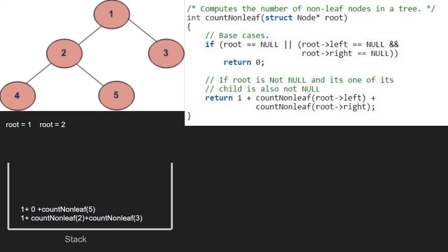Next, we call for the right child of 2 which is 5. So, root will point to 5.